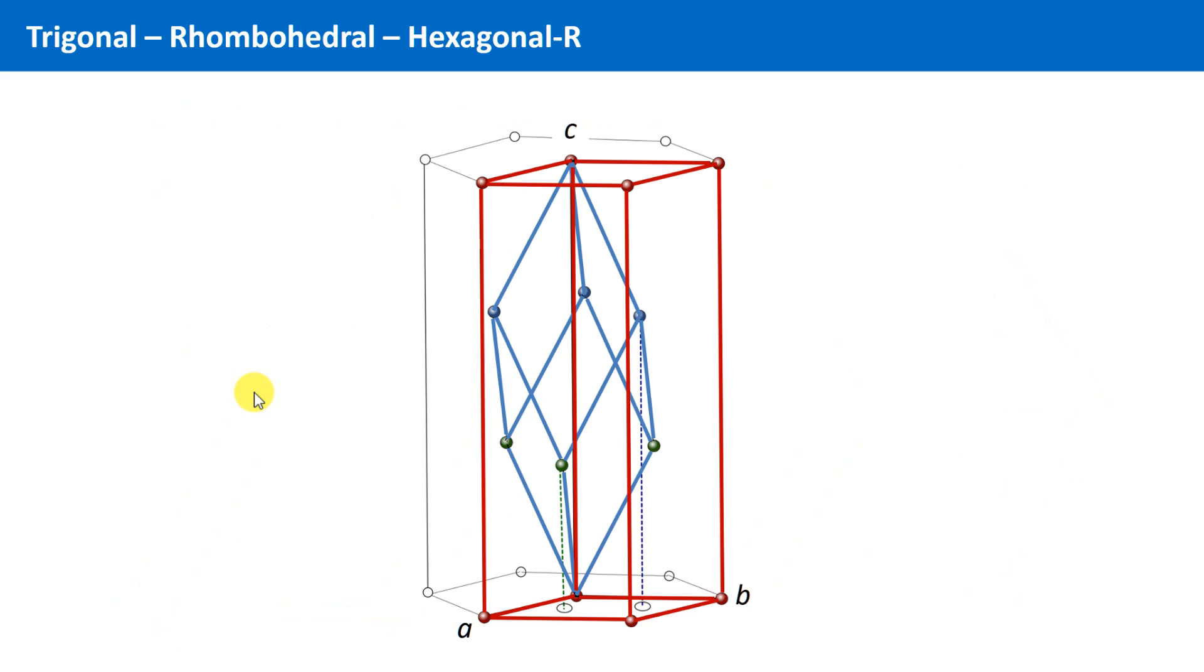This is also valid for those crystals of the trigonal crystal system that have a rhombohedral lattice, when they are represented in its primitive form. But it is always possible to transform the primitive rhombohedral cell into the R-centered cell with hexagonal metric.